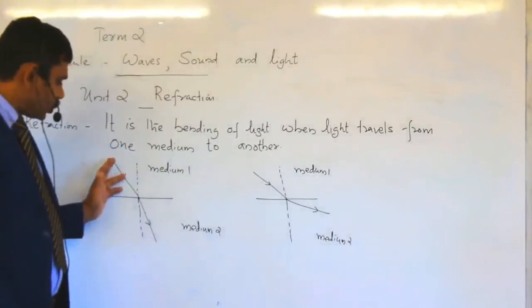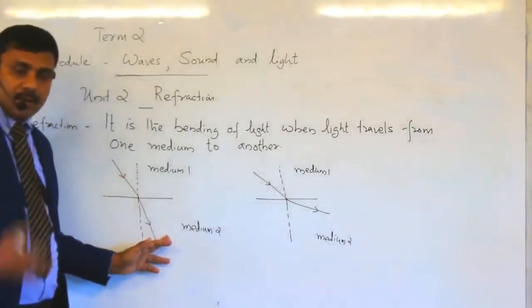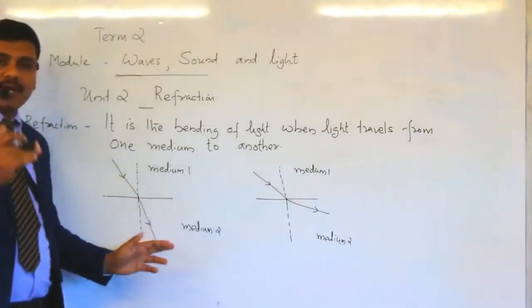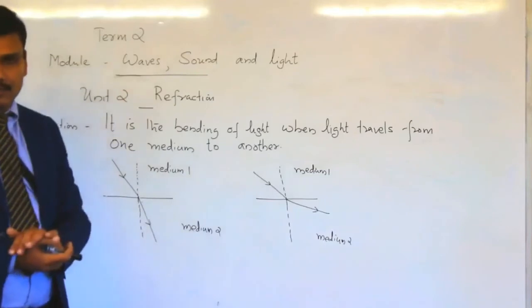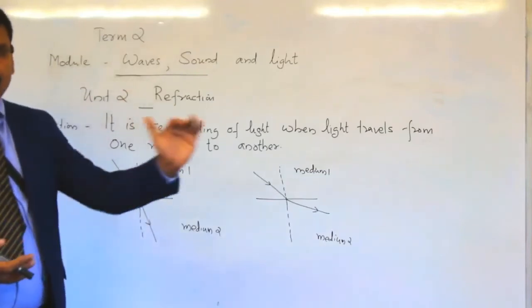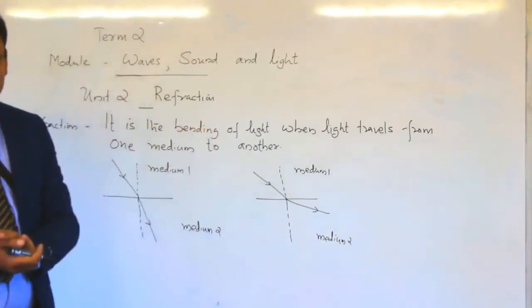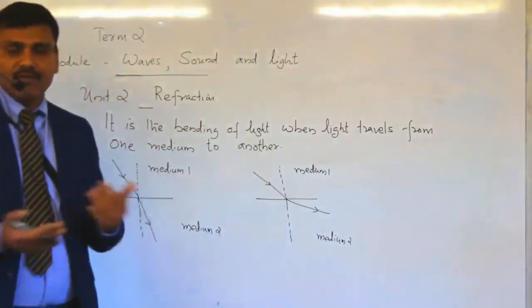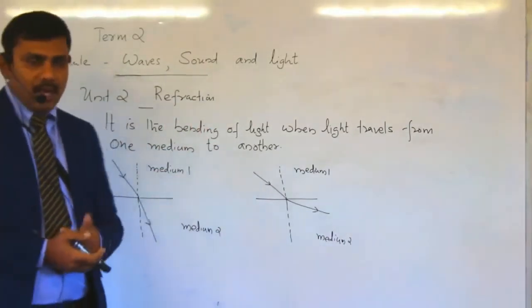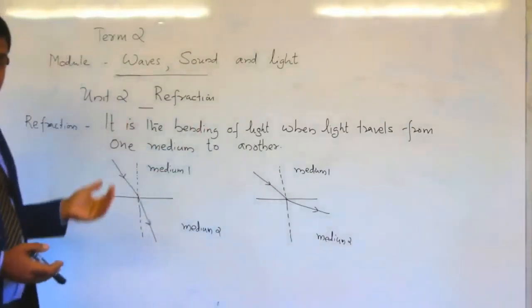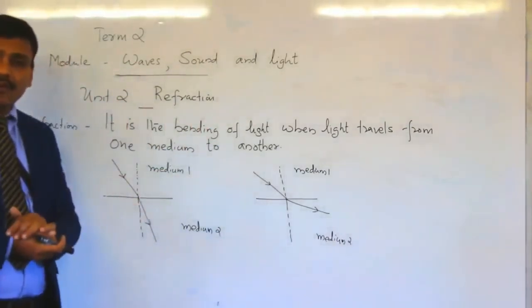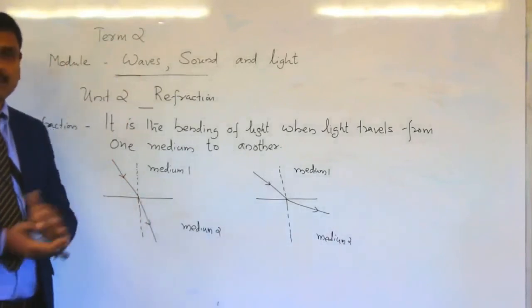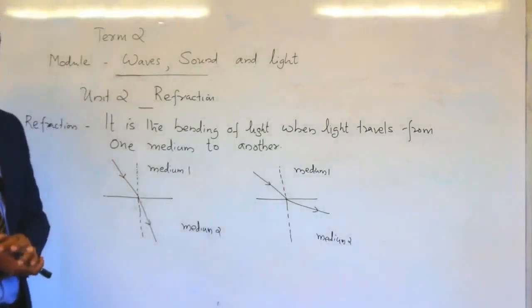The light should travel in its straight path, but when light travels from one medium to another, it can deviate — toward the normal or away from the normal. This phenomenon of light is known as refraction. It is one of the basic phenomena of light.